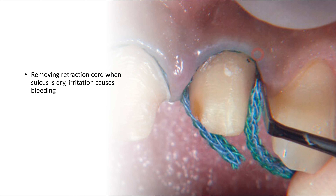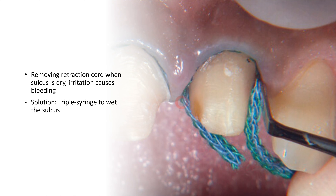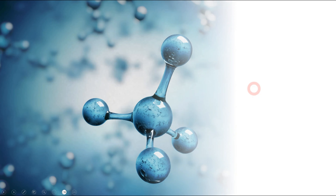To overcome bleeding from gingival retraction cord, we have a simple solution: use a triple syringe to slightly moisten the cord before removal — do not over-wet it, just enough moistening so that the cord can be easily removed. This prevents rupture of the capillaries and avoids bleeding, which is an important clinical aspect when using gingival retraction cord.